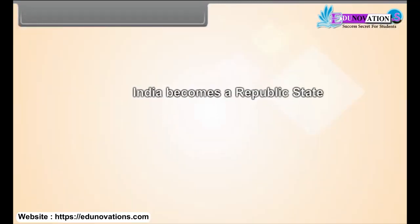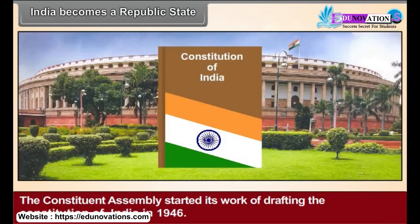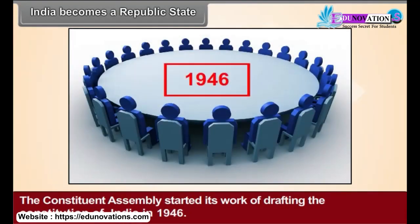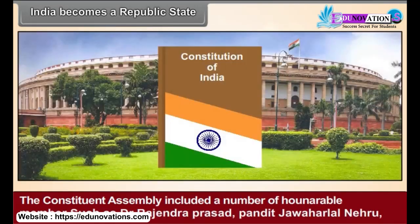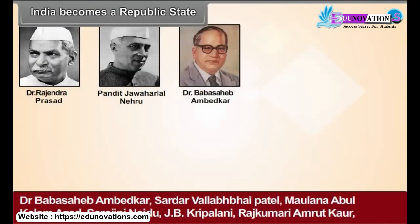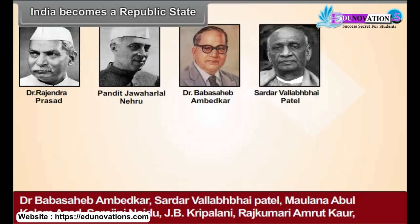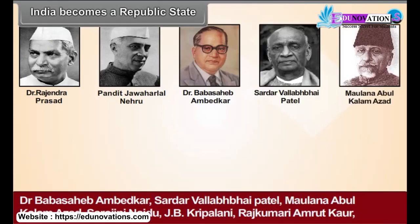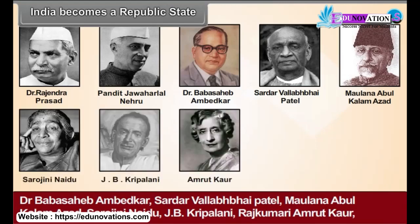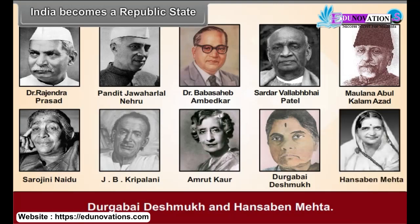Gandhiji strove day and night to preserve Hindu-Muslim unity and laid down his life in the same cause. India Becomes a Republic State: The Constituent Assembly started its work of drafting the Constitution of India in 1946. The Constituent Assembly included a number of honourable members such as Dr. Rajendra Prasad, Pandit Jawaharlal Nehru, Dr. Babasaheb Ambedkar, Sardar Vallabhbhai Patel, Maulana Abul Kalam Azad, Sarojini Naidu, J.B. Kriplani, Rajkumari Amrit Kaur, Durgabai Deshmukh, and Hansa Ben Mehta.